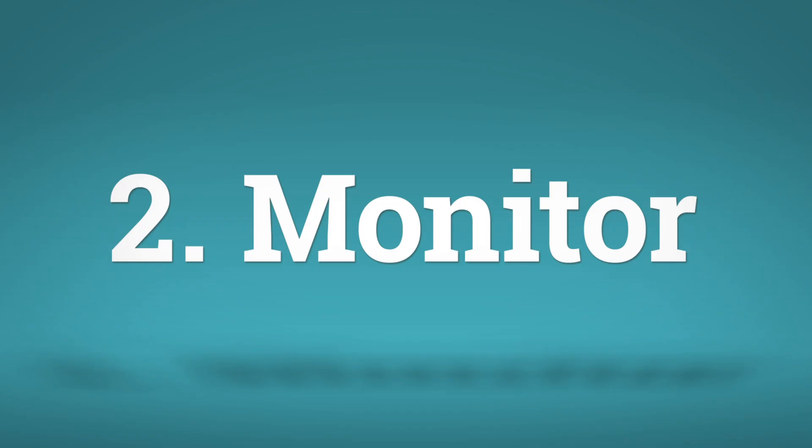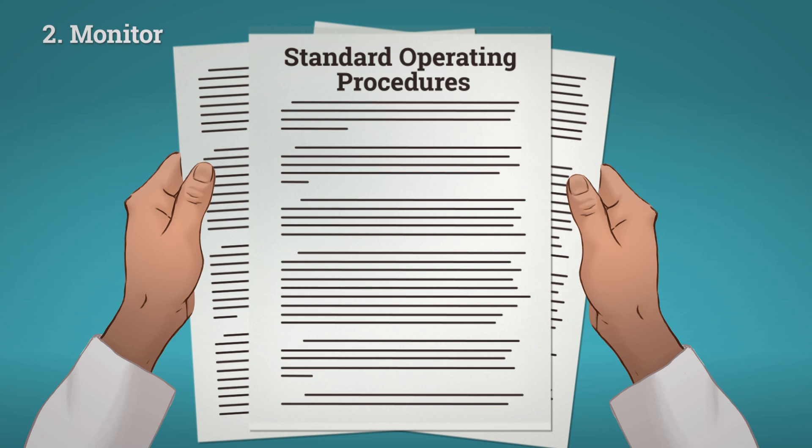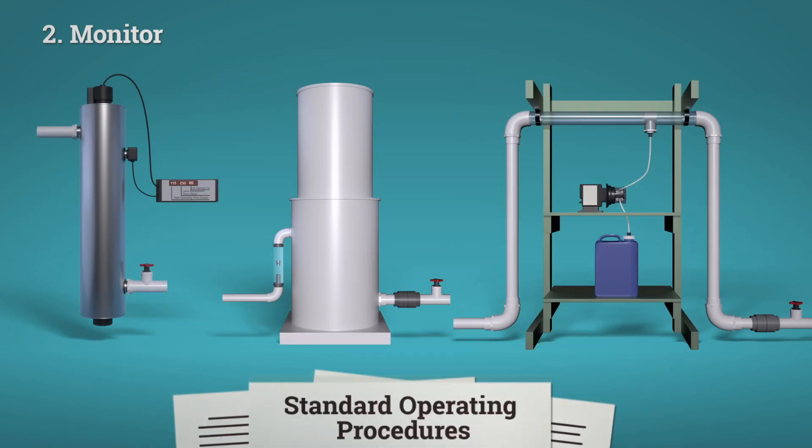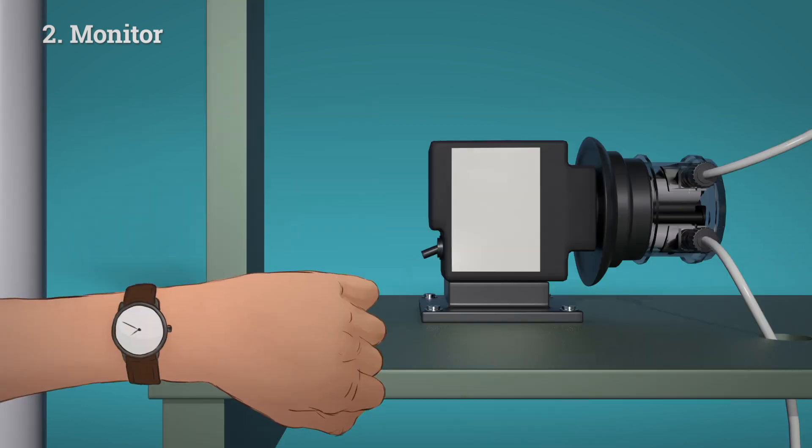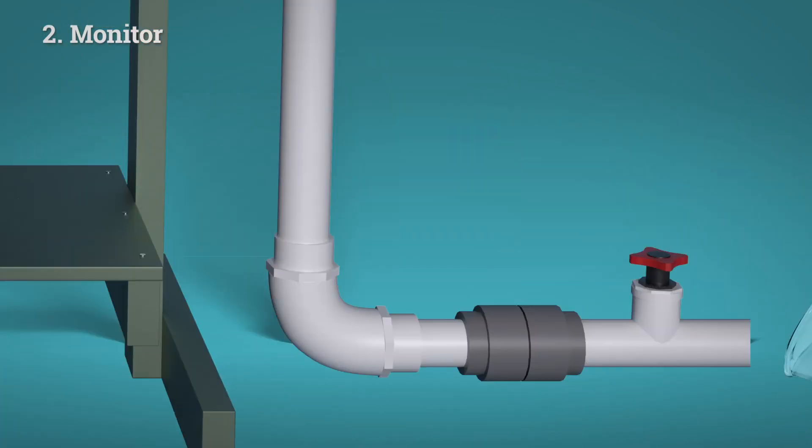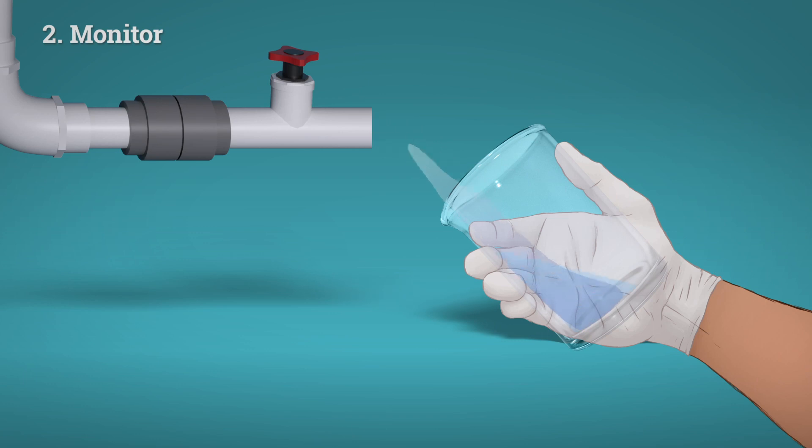Number two, monitoring. Make sure to have a set of standard operating procedures for your equipment, and make sure all employees are trained in these procedures. Monitor systems to make sure the equipment is working properly and test the water to make sure the system is effective.